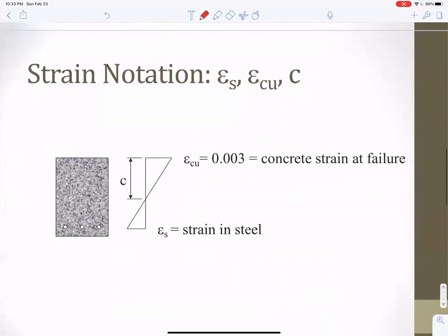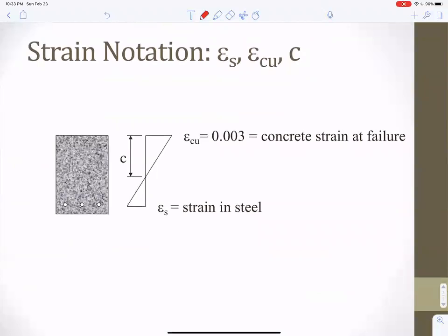Strain notation: Epsilon C U is the ultimate strain of the concrete, which I'm going to take to be, ACI takes at 0.003. That does change depending on confinement and things like that, but for these series of notes we're going to take 0.003. The strain in the steel at the bottom, Epsilon S, is the strain in steel, and the depth to the neutral axis is C.